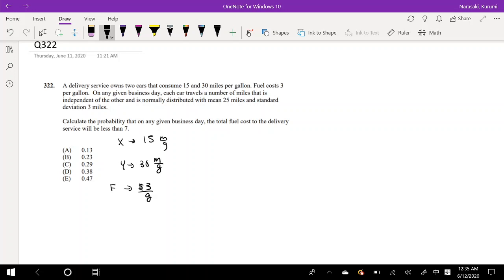On any given day, each car travels a number of miles that is independent of other and is normally distributed with mean 25 and standard deviation 30 miles. Whenever I hear the word normally distributed, I always think of the z-score, and it usually does have something to do with the z-score.